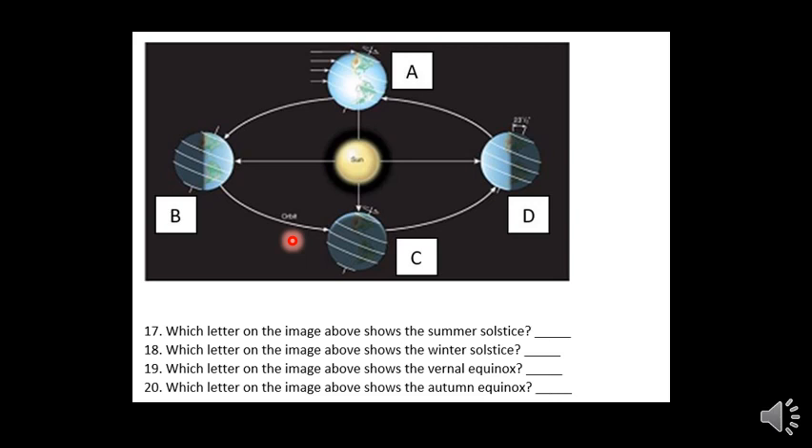And if you lean away from a fire, you're going to cool down. So right here in position B, this would be summertime in the northern hemisphere, where we're leaning in towards the sun - the summer solstice.